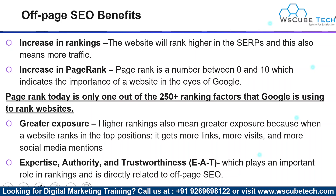What are the benefits of doing off-page SEO? The first and most important benefit is an increase in ranking — websites will rank higher in the search engine results page, which also means more traffic. Second, there is an increase in page rank, which is a number between 0 to 10 indicating the importance of a website in the eyes of Google. Page rank is one out of 250-plus ranking factors that Google uses. You can also get greater exposure, since higher ranking means more visits and more social media mentions. Next, there is the EAT model — expertise, accuracy, and trustworthiness — which plays a very important role in ranking and is directly related to off-page SEO.